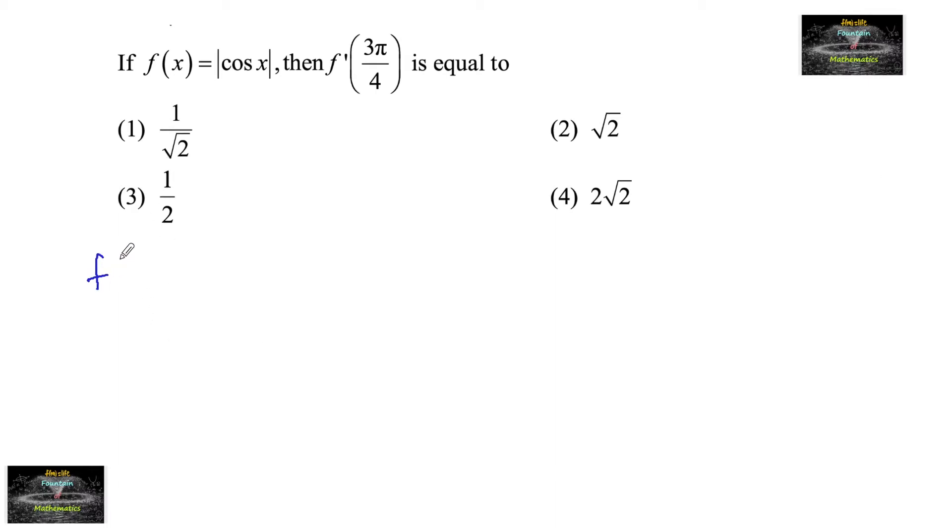Given f is equal to |cos x|, we need to find f'(3π/4). We know that d/dx of |x| is equal to |x|/x.